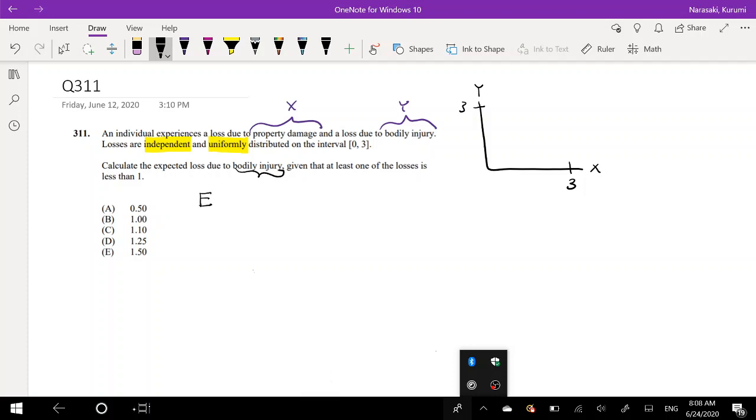So we're just going to say what's the expected value of y given that at least one of the losses is less than 1. So that means it could either be x is less than 1 or y is less than 1 or both x and y could be less than 1. So let me just say less than 1.